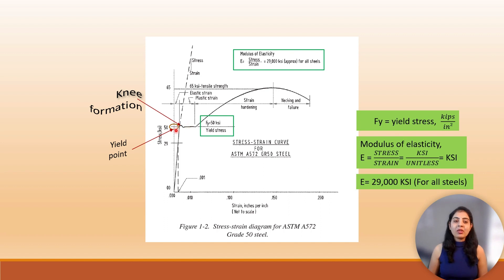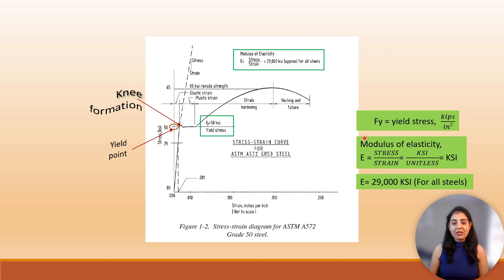The point at which this knee forms is called the yield point. For steels which do not have this sharp knee formation, the corresponding stress is called yield strength, noted as Fy and called yield stress, expressed in units of kips per inch square. In the stress-strain diagram, in the elastic range, the relationship between stress and strain is constant at normal temperature, constant for both tension and compression loading, and constant for all steels irrespective of their yield stress. This ratio is termed the modulus of elasticity, denoted by E.